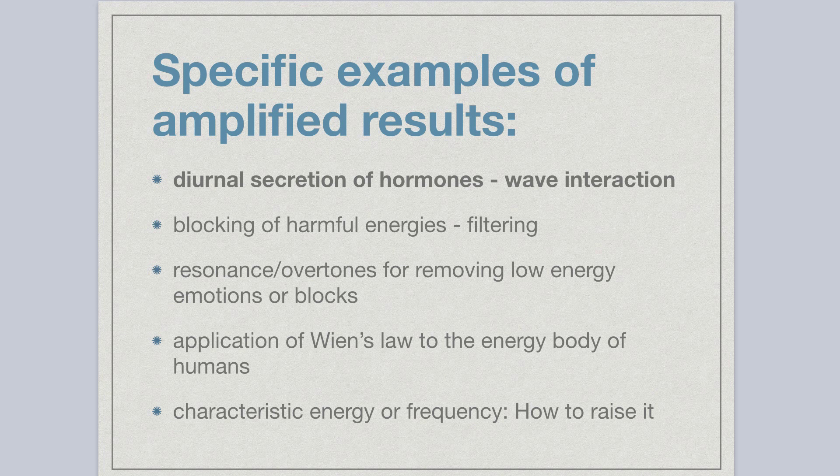And I also show the application of Wien's Law to the energy body of humans. And what Wien's Law says is that the higher your energy is, the shorter your wavelength or the higher your frequency is, and the brighter you glow. And this actually is an exponential relationship. And lastly, I show how to arrive at a characteristic energy or frequency and how we can raise it.